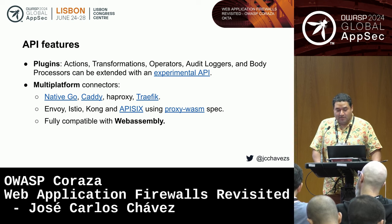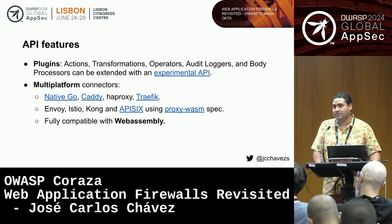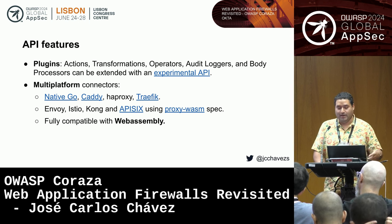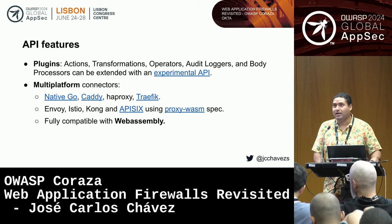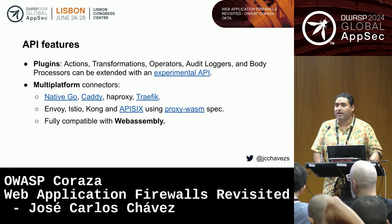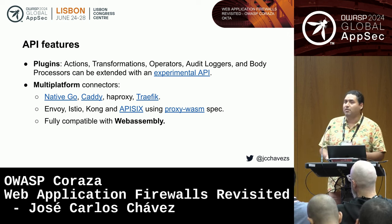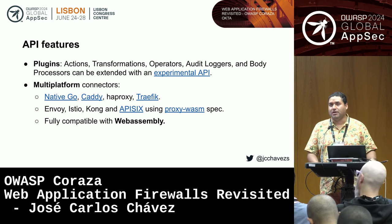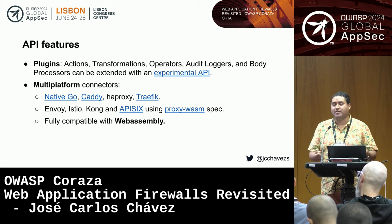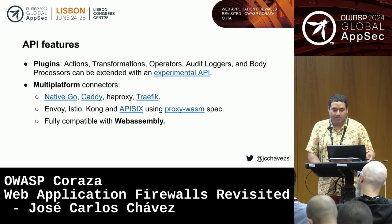We have multi-platform connectors. You can run Coraza in native Go, in Caddy, in hub proxy, and recently in Traefik. In Traefik, there are two ways: natively in Go, or via WebAssembly — you compile the Coraza middleware into WebAssembly and load it through Traefik. We also target Envoy, Istio, Kong, and API6, all using Proxy-Wasm.